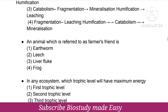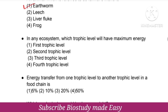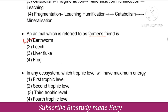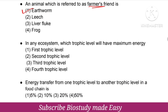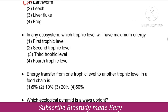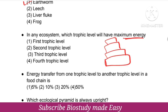An animal referred to as the farmer's friend — the right option is earthworm. In any ecosystem, which trophic level will have maximum energy? The options are first, second, third, and fourth. The right option is first trophic level, because there are producers.